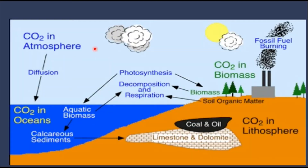This carbon cycle diagram shows how elemental carbon is exchanged between the biosphere, pedosphere, geosphere, hydrosphere, and the atmosphere of earth. The carbon cycle is the most important process on planet earth because it allows the earth to recycle and reuse its most abundant element — carbon. The annual movement of carbon between reservoirs occurs because of various chemical, physical, geological, and biological processes that occur in the soil.